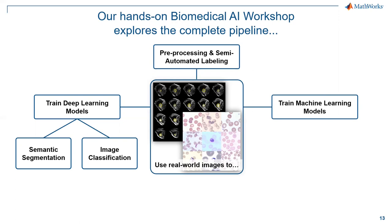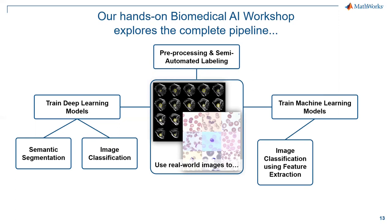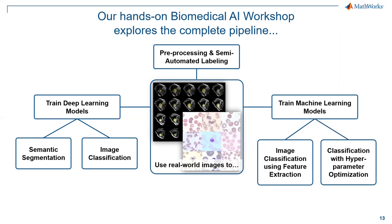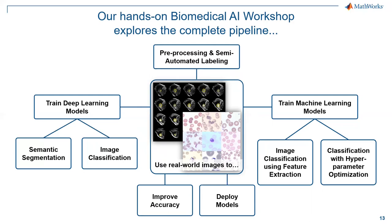The workshop also covers machine learning models — how to use feature extraction as a pre-processing step before training, and expands to discuss hyperparameter optimization, which is the process of tuning the parameters used to train the model. We also talk about other ways to improve accuracy. Finally, deploying models — generating code to run on an embedded or edge device. Today we don't have time to cover all of this, so we're just going to talk about one piece: using a deep learning model to classify images of blood smears.